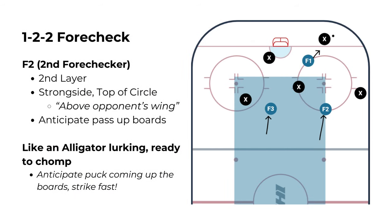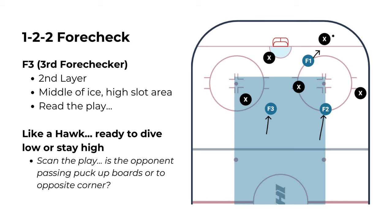Next, we have F2 and F3 entering the zone — these are typically our other two forwards. Notice that they create a second layer to our pressure. F2 is on the strong side of the ice and positioned near the tops of the circles. I like to think of F2 like an alligator lurking in the right spot, ready to quickly chomp up the puck when it comes up the boards. F3 is our third forechecking player and they cover the high slot. I think of them like a hawk because they're high in the zone but ready to dive down low if the puck moves to the weak side corner, or they'll stay high if the puck comes up the strong side boards.